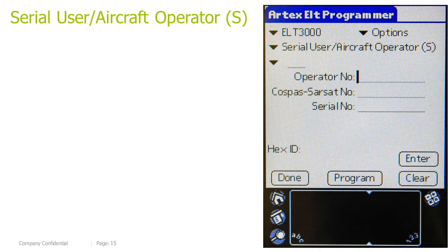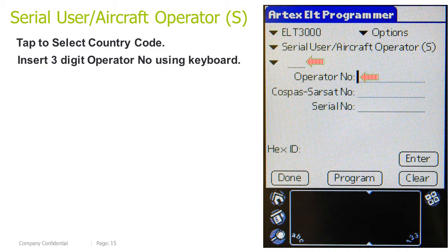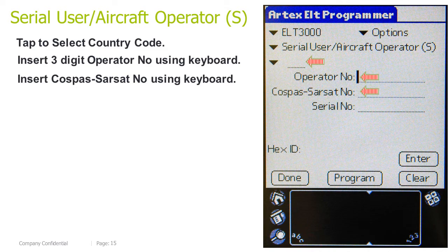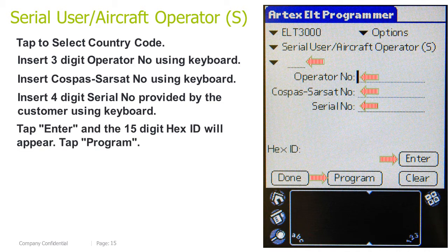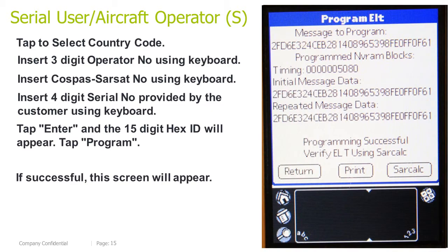Serial user aircraft operator short: tap to select the country code. Insert the 3-digit operator number. Insert the COSPAS-SARSAT number. Insert the 4-digit serial number provided by the customer using the keyboard — this is not to be confused with the ELT 5-digit serial number. Tap Enter and the 15-digit hex ID will appear. Tap Program. If successful, this screen will appear.